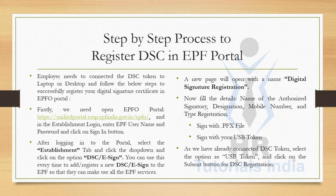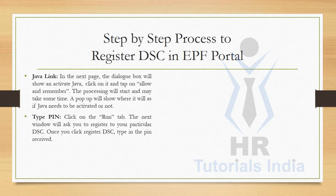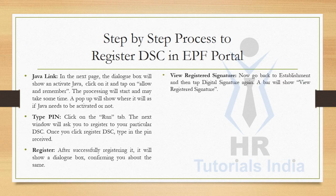For DSC registration, a Java link dialog box will appear — click on it and tap Allow and Remember. The processing will start and may take some time. A pop-up will ask whether Java needs to be activated; click the Run tab. The next window will ask you to register your particular DSC. Click Register DSC and type in the PIN received with your token.